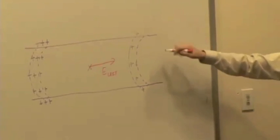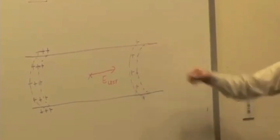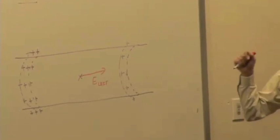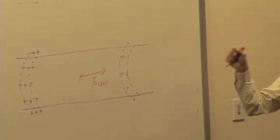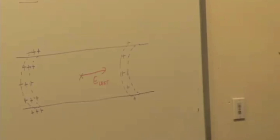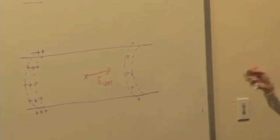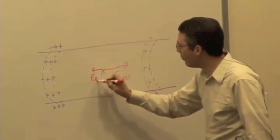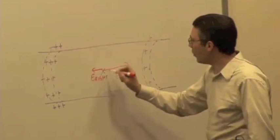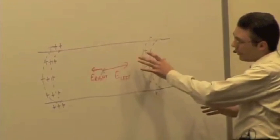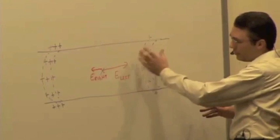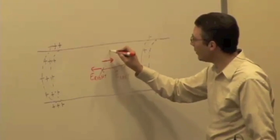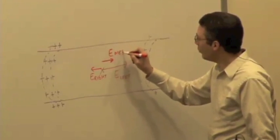The electric field due to the charge ring on this side would be pointing in what direction? Opposite, right? But how would its magnitude compare? Be smaller, right? So we end up with electric field due to the right end pointing that way. But overall, because of the difference in charge, because the charges are not equal, and so the fields don't cancel out, you end up with a net electric field pointing in this direction.